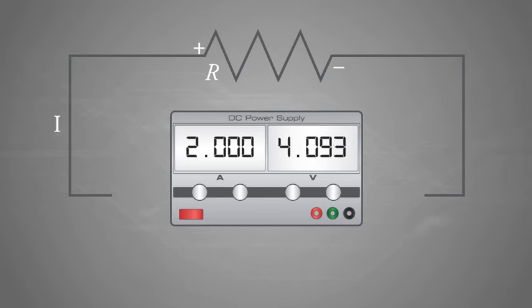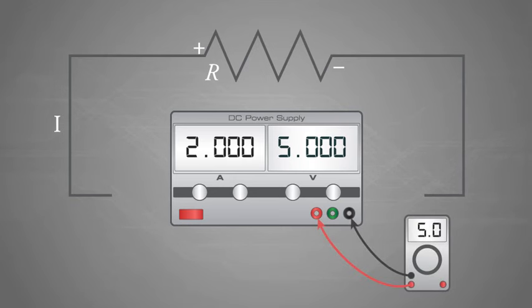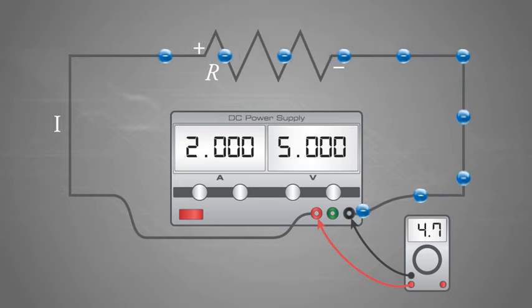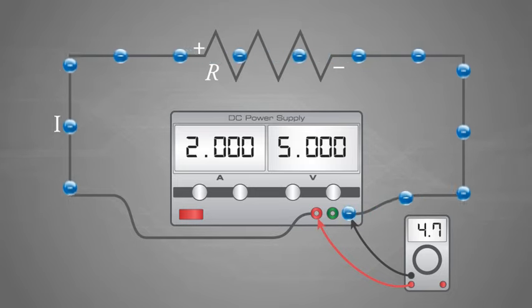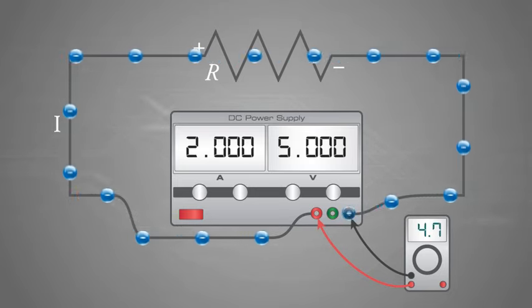Note that the unloaded voltage of the power supply is set to 5 volts. A DC power supply will experience a loss of potential difference due to the internal resistance of the supply. When the circuit is connected and current starts to flow, the internal resistance of the power supply reduces the applied circuit voltage to 4.7 volts.